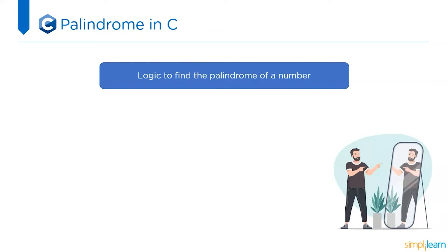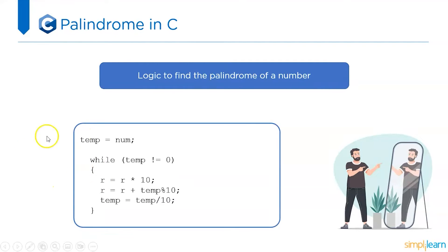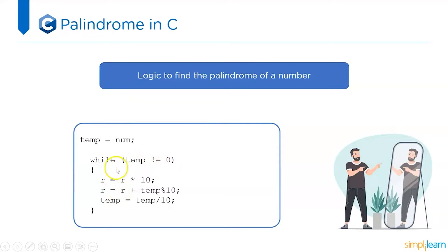Let's understand the logic to find the palindrome of a number. As you can see, this is the piece of code. Whenever you enter a number, it is stored in a temporary variable. Then it checks the while condition: while temp is not equal to zero, it will execute this set of code. First, r is equal to r multiplied by 10. Initially, if r equals 0, then 0 multiplied by 10 is 0, and that is stored in r.